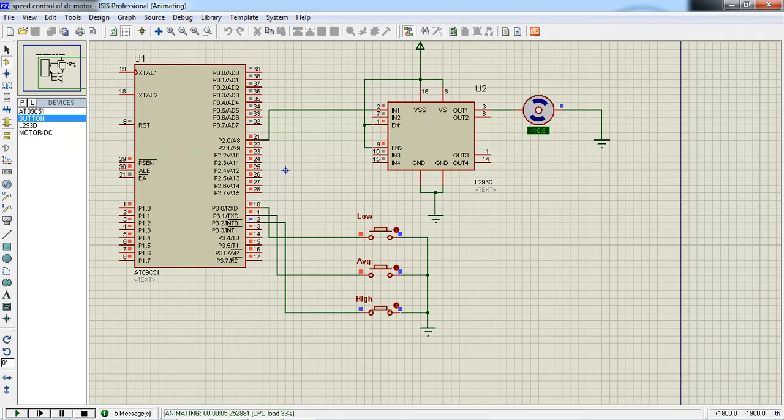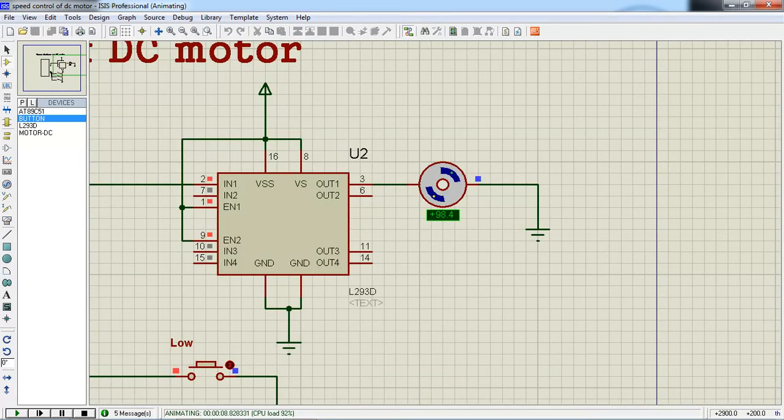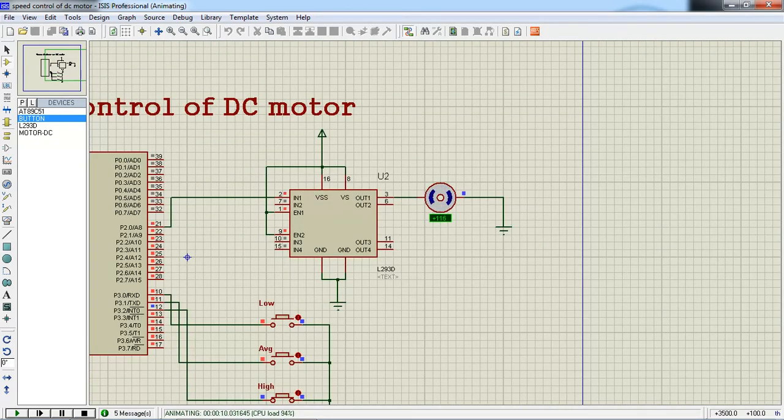Whenever I am operating button high, then it starts running with maximum RPM. Let's see this RPM, which is more in the case of high button, which will reach up to 190 or 200. This motor runs with high speed in the case of high button.